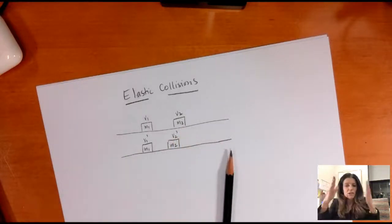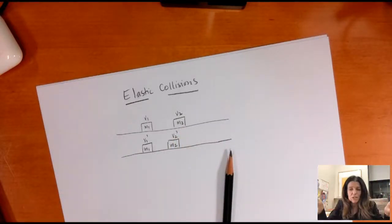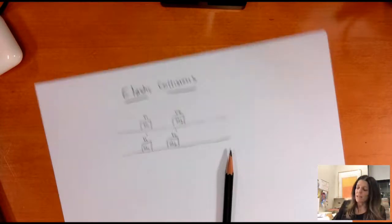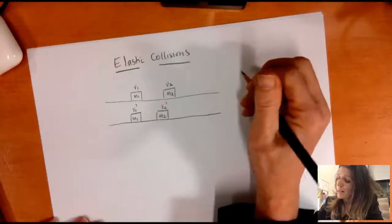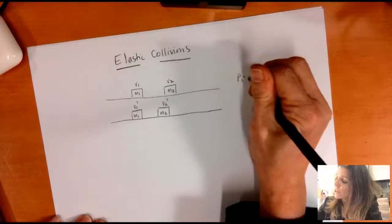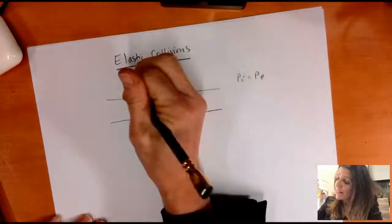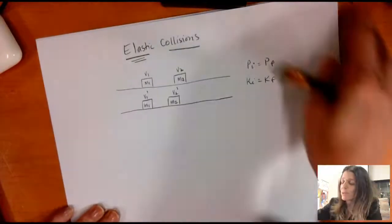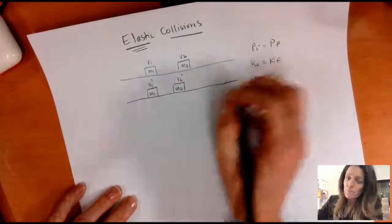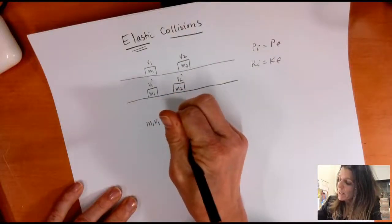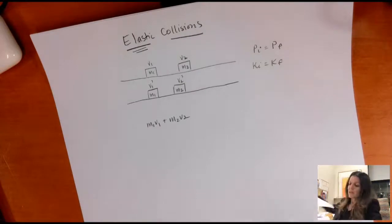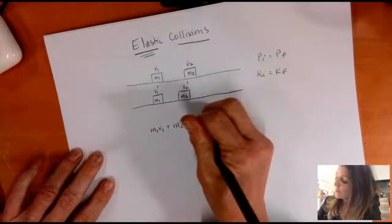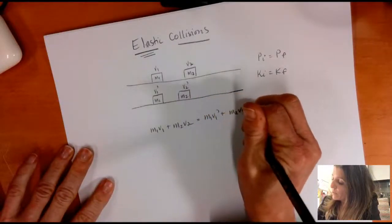If you want to picture something, you could picture two things coming in and bouncing off each other, or one being stationary, one comes in and hits it, and then something happens. This is the most general case. Since it's a collision, we know we can say P initial equals P final, and if it's elastic, we can also say K initial equals K final. So let's write out both of those equations. P initial equals P final gives us M1 V1 plus M2 V2 equals M1 V1 prime plus M2 V2 prime.